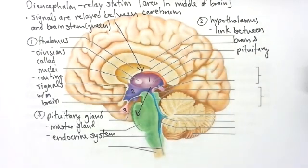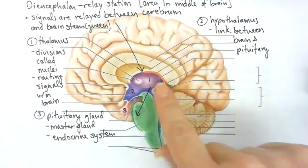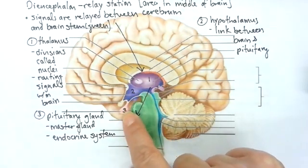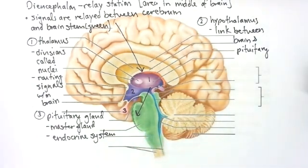So our takeaways: we talked about the limbic system, which controls your emotions. We have the hippocampus and the amygdaloid body — also called the amygdala — which are responsible for memory and emotions. Then we get into the diencephalon, which has three pieces that route things: the thalamus, the hypothalamus, and the pituitary, with the pituitary actually being part of the endocrine system. That finishes up this section, and on the next one we'll begin to talk about the brainstem.